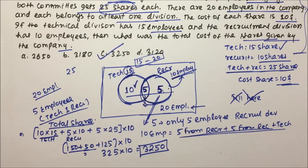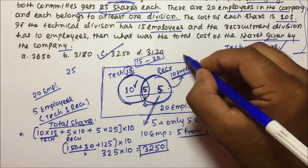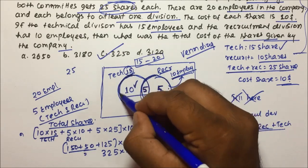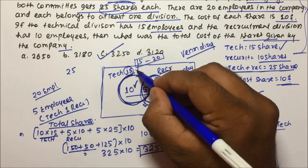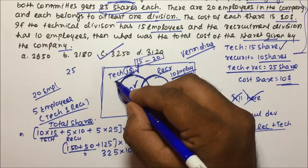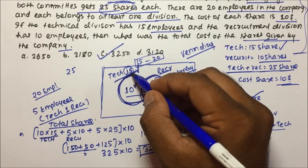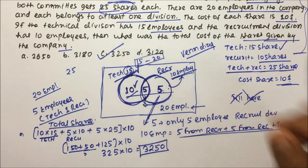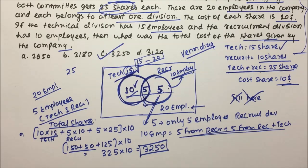This question was not difficult but a little tricky — you need knowledge of Venn diagrams. The full technical circle represents 15 employees: 10 are only-technical and 5 are in both technical and recruitment. I hope you understood the questions and solutions. Thanks a lot for watching and all the best for your TCS exam.